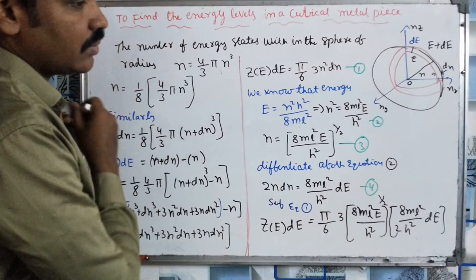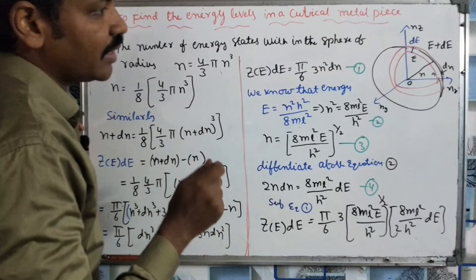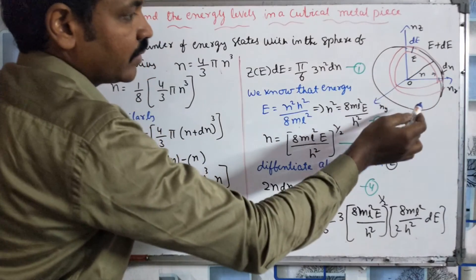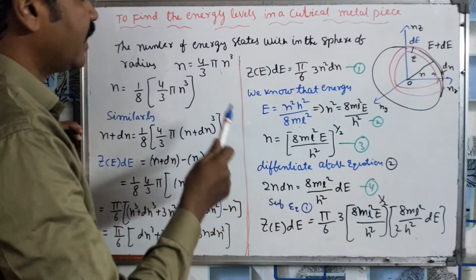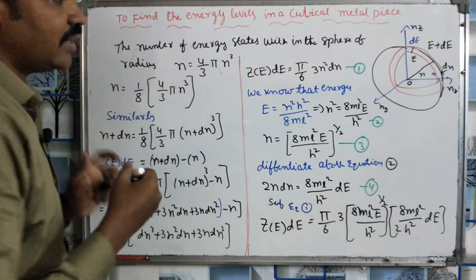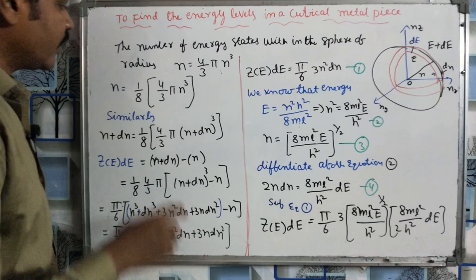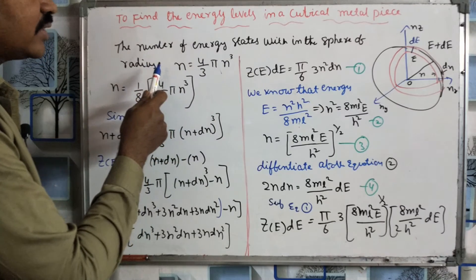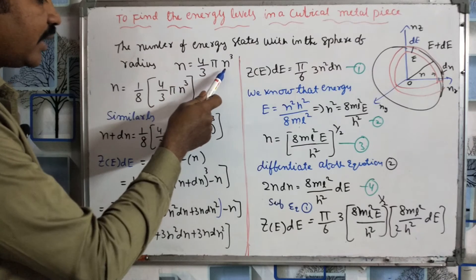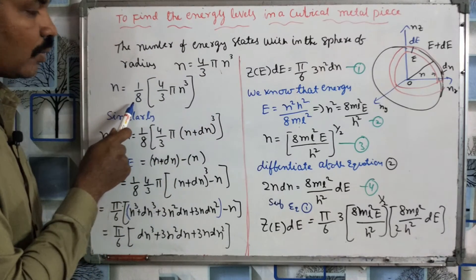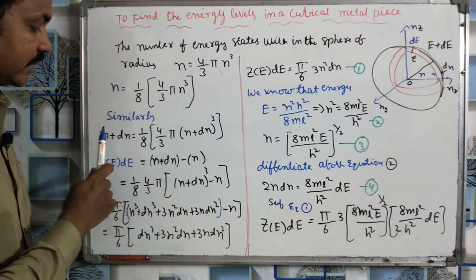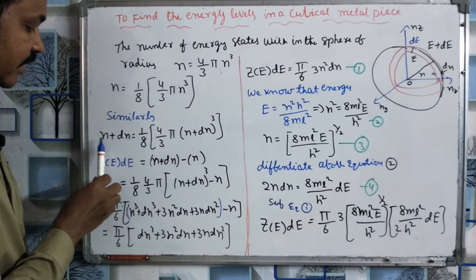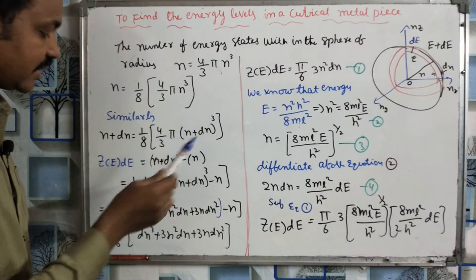We can find out the same energy levels in this region. We can find the sphere of N. In this region, we can find out the same number of energy states — that is the density of states. We can find out the sphere of N, and the number of energy states is (4/3)πN³. We can find out the sphere of 1/8.